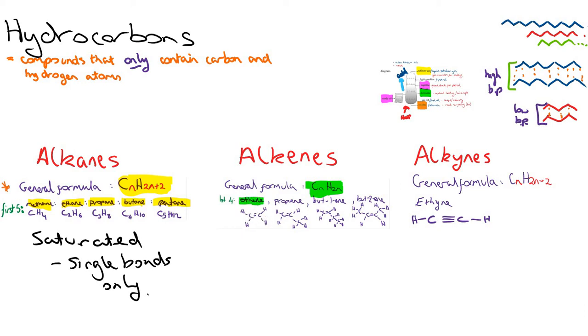And the first one this time is ethene because you can't have an alkene with just one carbon because it has to contain a carbon-carbon double bond. So we call this unsaturated because it contains a carbon-carbon double bond. So the next member of the series would be propene, then but-1-ene and but-2-ene.